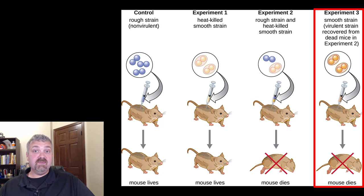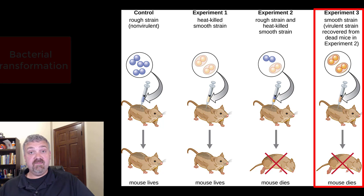That's really what's important here. Then his last experiment, he took those organisms that came out of this dead mouse from experiment two and put them in another mouse and it got sick and it died. What actually happened here was he knew that some sort of material was transferred from the dead organism to the living organism.